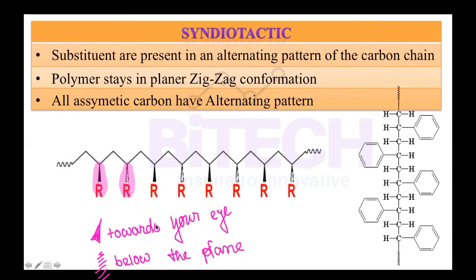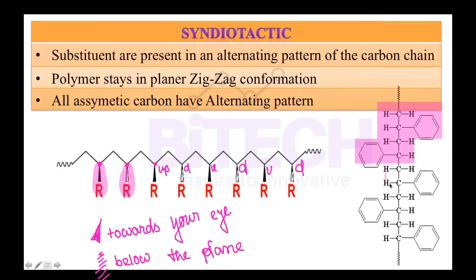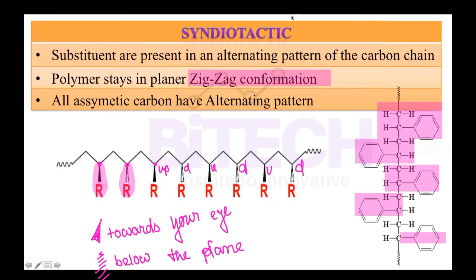So the pattern is: up, down, up, down — alternating on either side. If one is on the left-hand side, the next is on the right, then left again, then right. This alternating zigzag confirmation along the carbon chain is what defines a syndiotactic polymer.